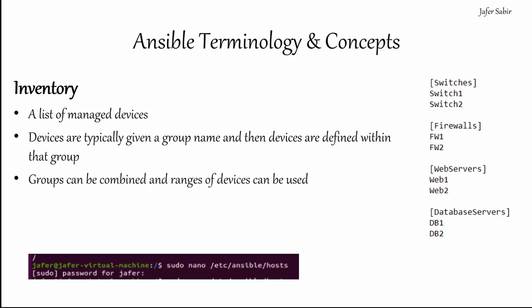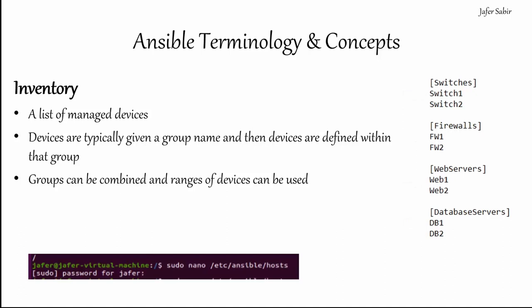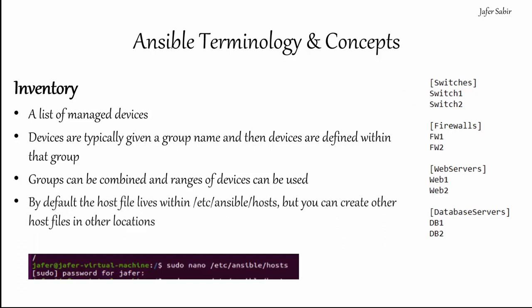You can combine groups and give them a new group name — for example combining switches and firewalls into a group called Networking. You can also use ranges to define hosts. By default the inventory file lives within the /etc/ansible/hosts directory, but you can create other project-specific ones and locate them where you want them.